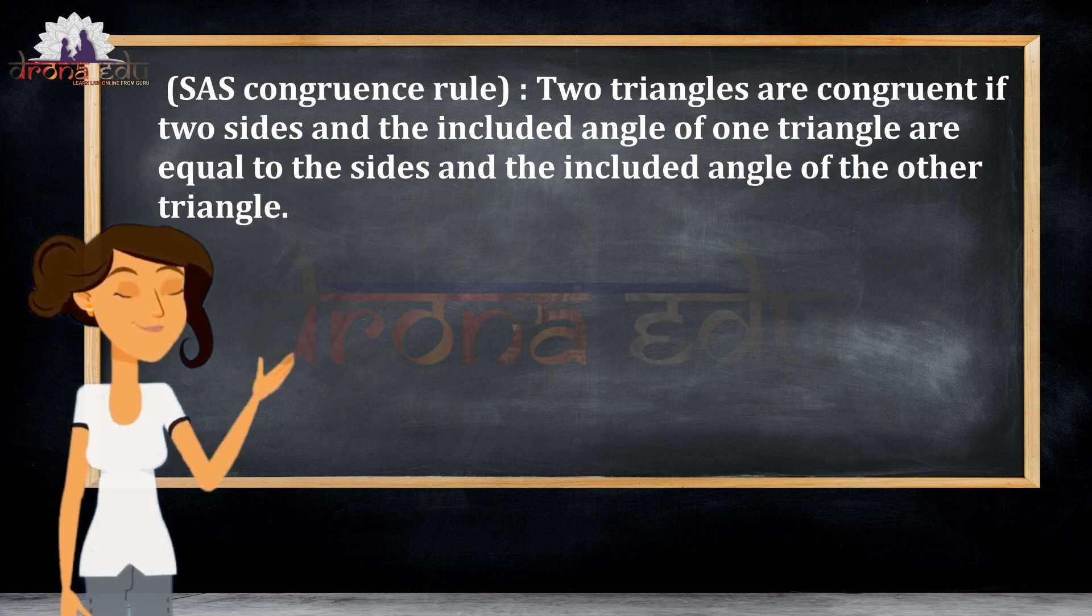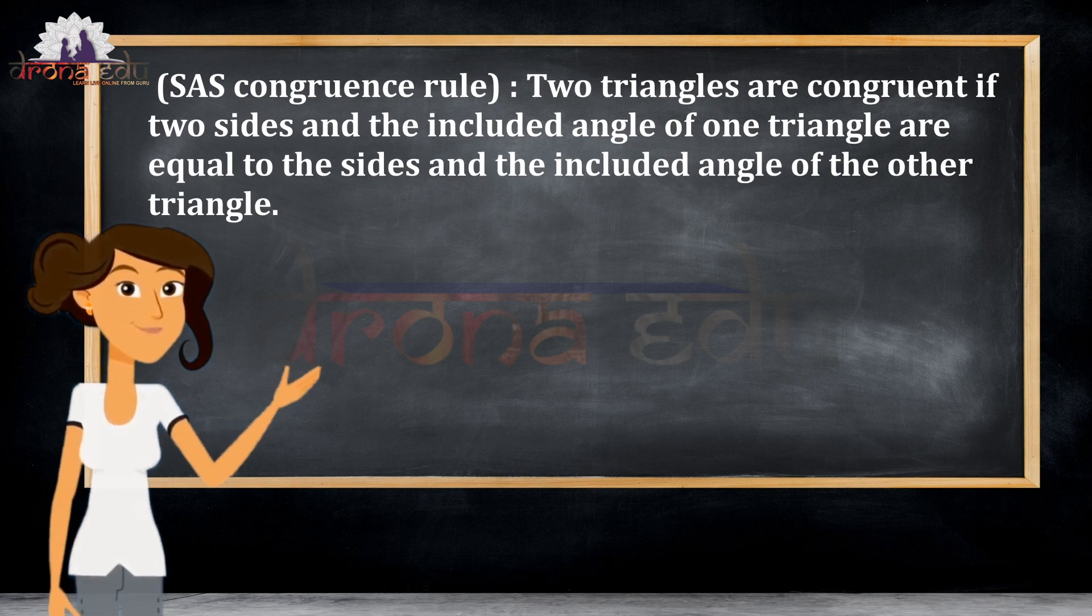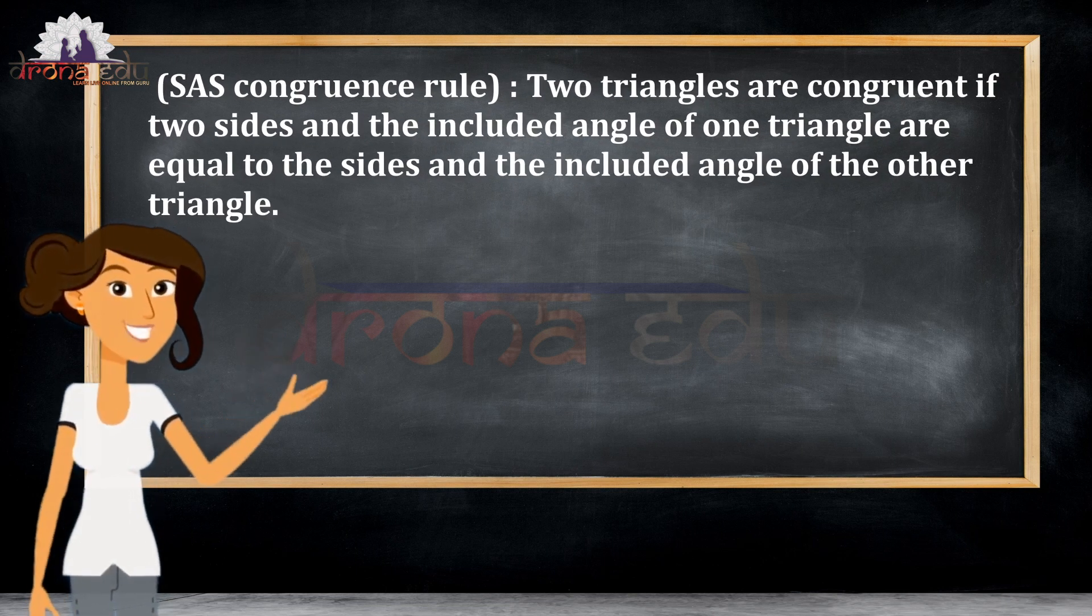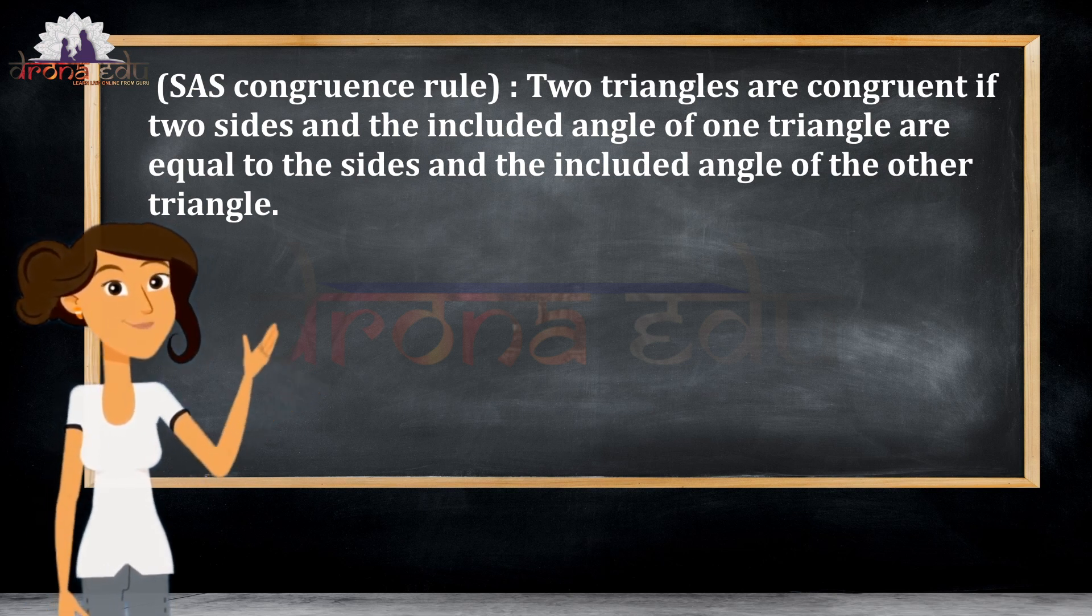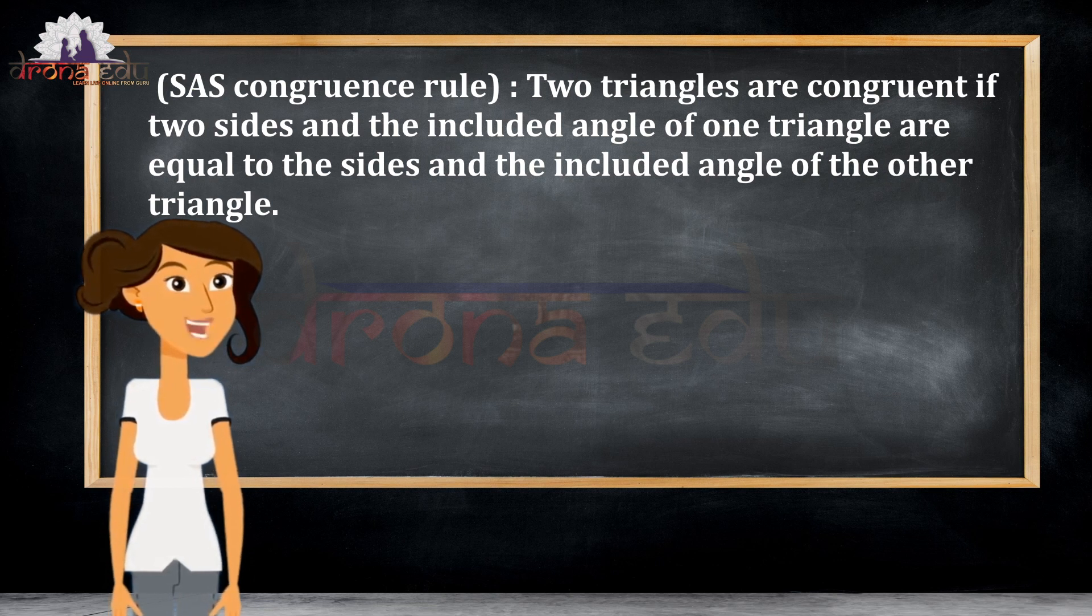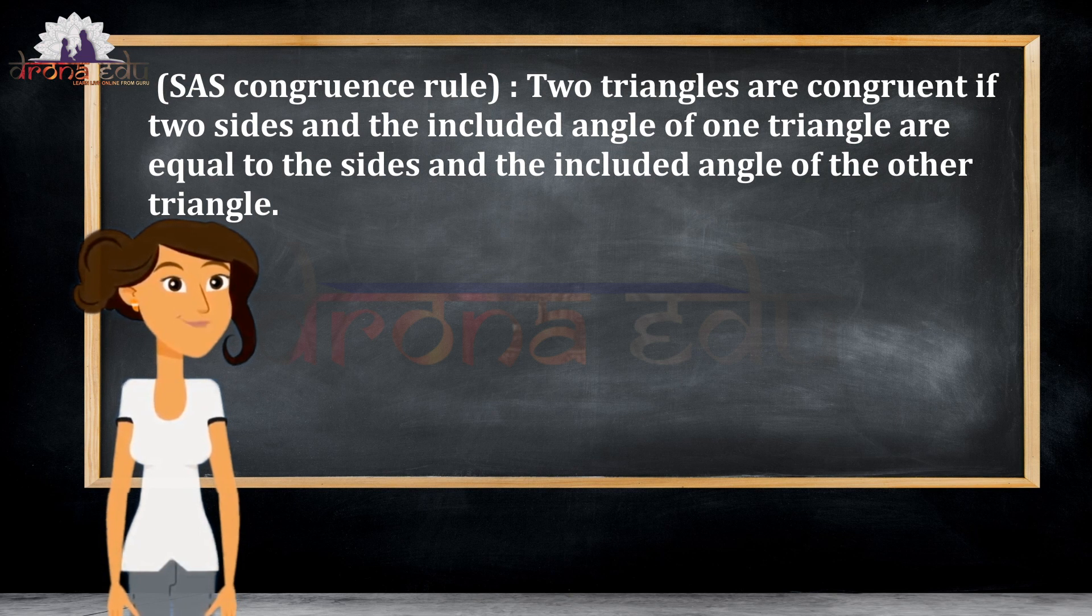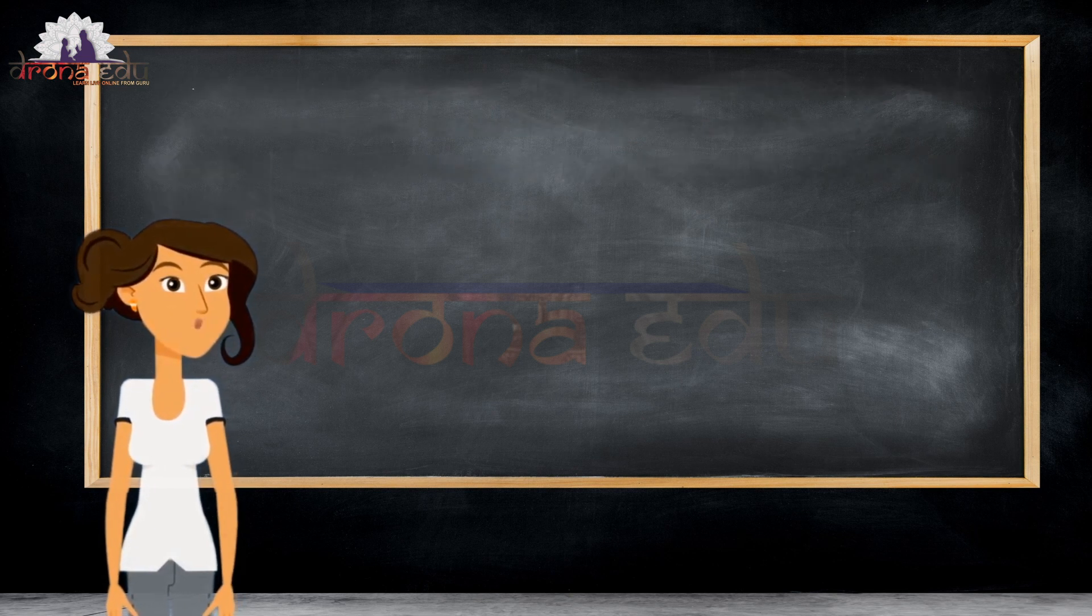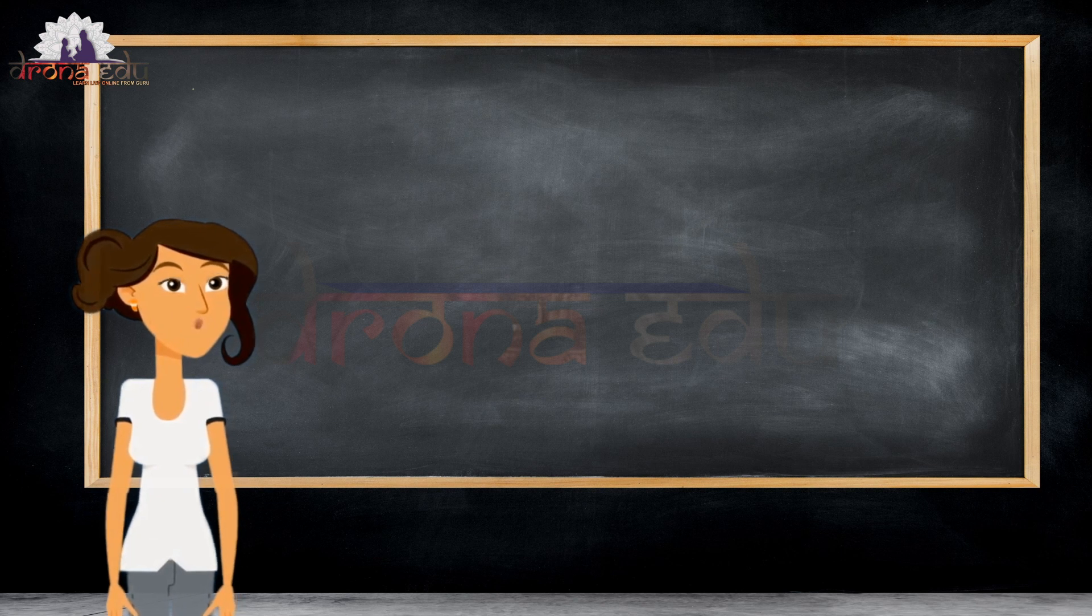From this, we get the SAS congruence rule, which states that two triangles are congruent if two sides and the included angle of one triangle are equal to the sides and the included angle of the other triangle. This is the first criteria for congruence of a triangle.